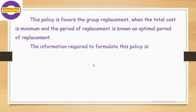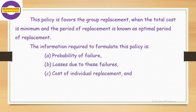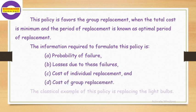The information required to formulate this policy is: 1. Probability of failure, 2. Losses due to failures, 3. Cost of individual replacement, 4. Cost of group replacement. The classical example of this policy is replacing light bulbs.